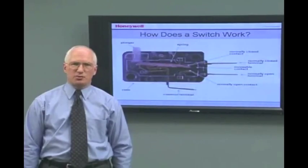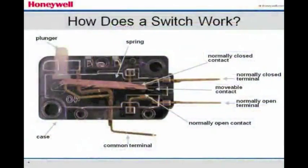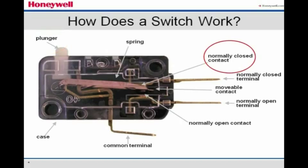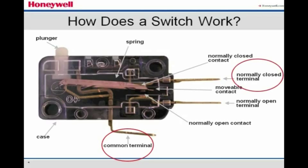So how does a switch work? This shows the inside of a switch. With the plunger in the released or free position, the common contact is against the normally closed contact. In this condition, the normally closed circuit of the switch can carry current. This means there is electrical continuity between the common terminal and the normally closed terminal. The common terminal is electrically insulated from the normally open terminal.